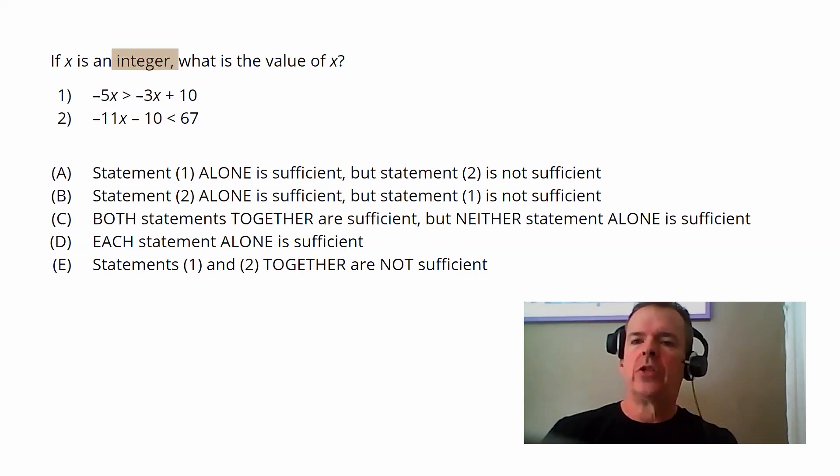You may recall that an integer is also called a whole number or counting number. So like negative two, zero, three, four, those are integers. 1.2, one half, those are not integers. So this is something that's a key thing to recognize when we are going through and doing our work.